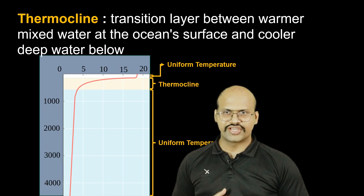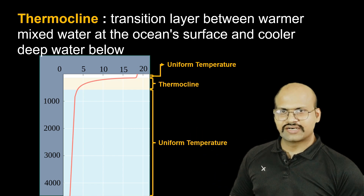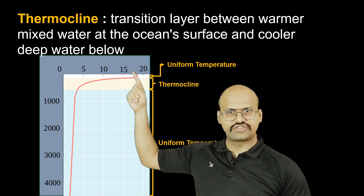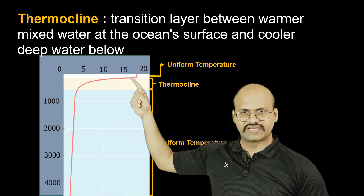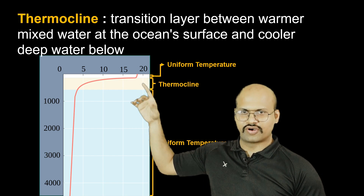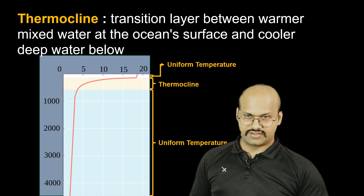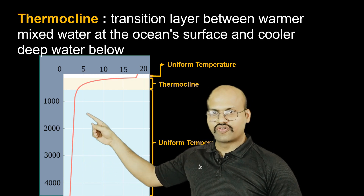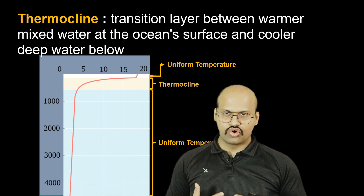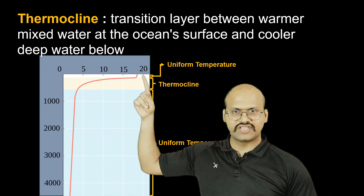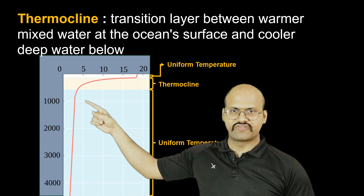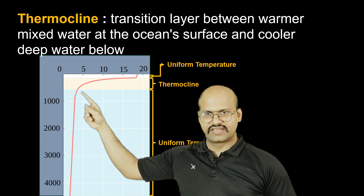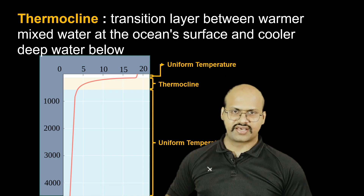Before going into details, let's discuss what thermocline is. For the first few hundred meters, the ocean temperature is uniform and warmer. In the deeper parts, the temperature is again uniform but colder. In between these two regions, the temperature changes drastically, and this region is called the thermocline.